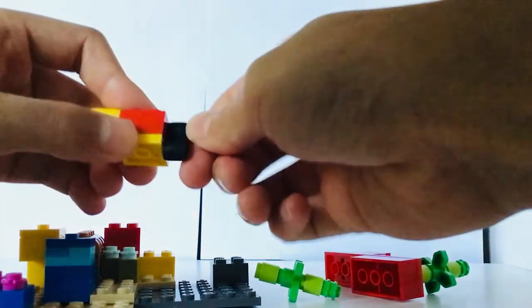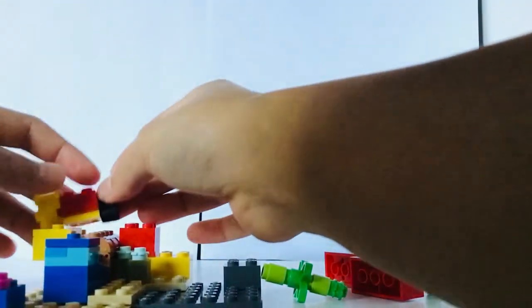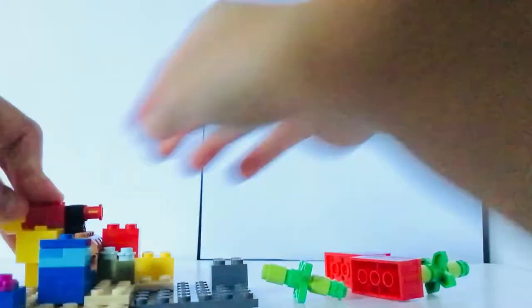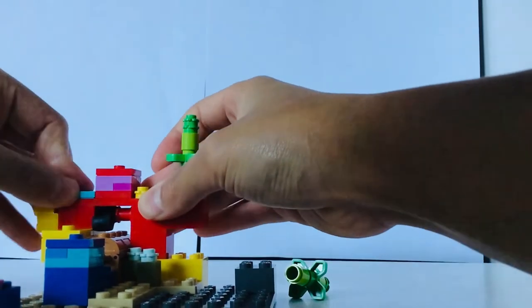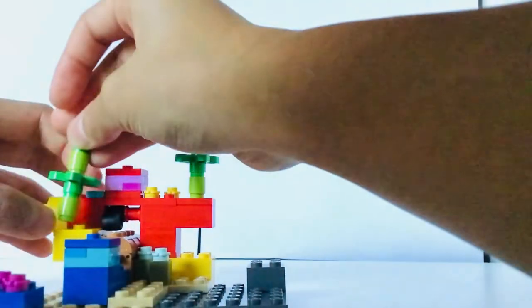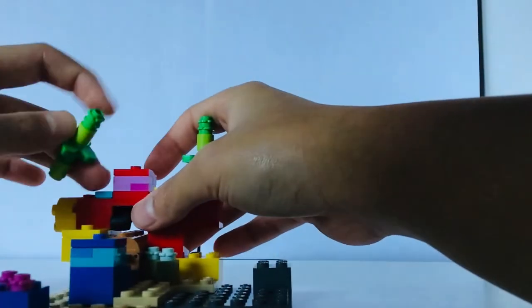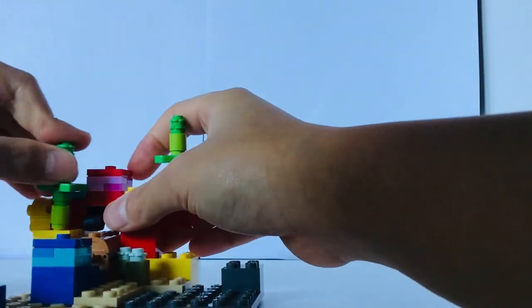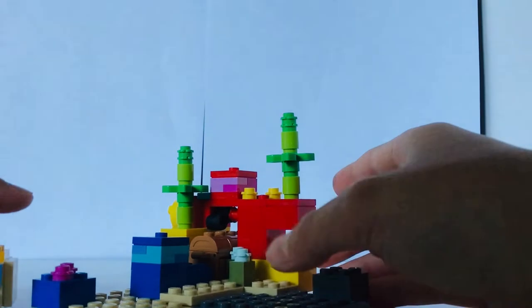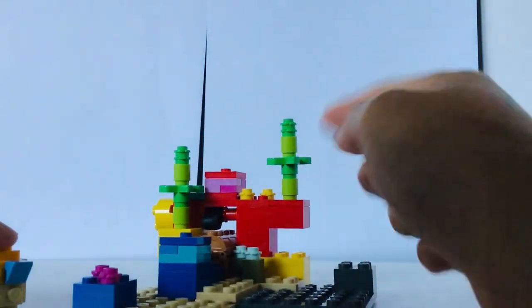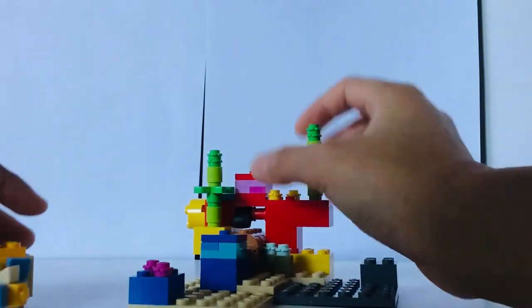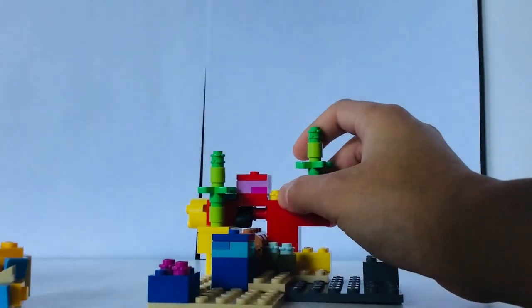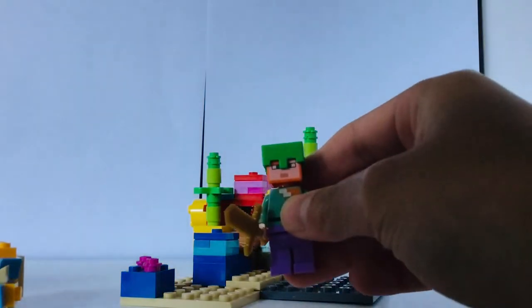You just basically twist it. The rubber will grip onto whatever piece is supposed to come out, and there you go. It comes out. And that is it with this set. And now, with the complaints. The complaints I have is that the seaweed, I don't really like because of the design. It's okay. And the turtle shell of Alex.